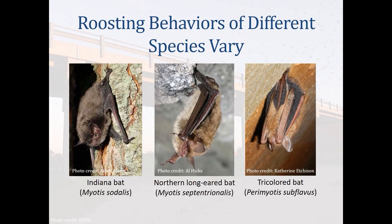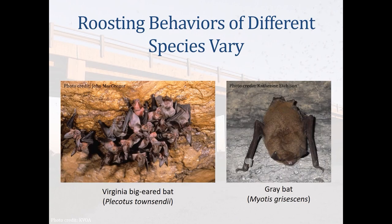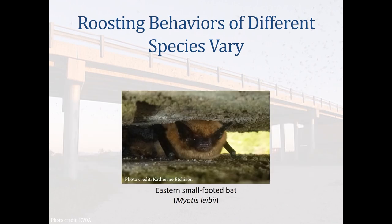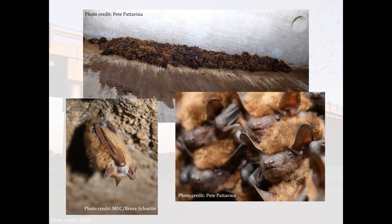For example, the Indiana bat, northern long-eared bat, and tricolored bat typically hibernate in caves or cave-like structures and form maternity roosts in trees. The Virginia big-eared bat and gray bat also hibernate in caves or cave-like structures, but they form maternity roosts in caves or cave-like structures as well. Eastern small-footed bats hibernate mostly in caves but are also known to hibernate in rock shelters and fissures in cliffs, as well as old mines and quarries. Some species of bats roost solitarily during the summer months, while other species' females form maternity colonies and males form bachelor colonies. Non-reproductive females often roost individually.